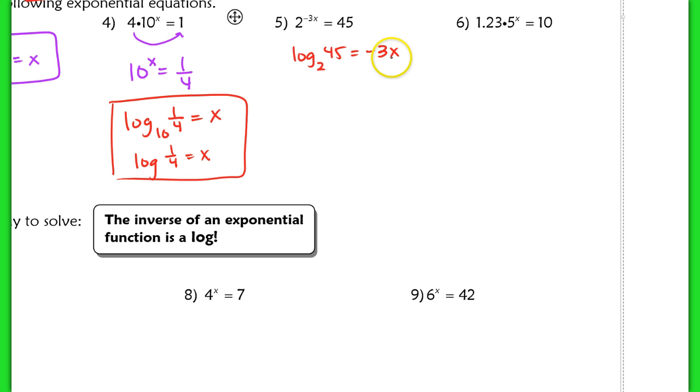In this case, x is not solved for. x is not by itself. If I want to further isolate x here, I simply divide by negative 3 on both sides. So my solution here is x equals log base 2 of 45 divided by negative 3.